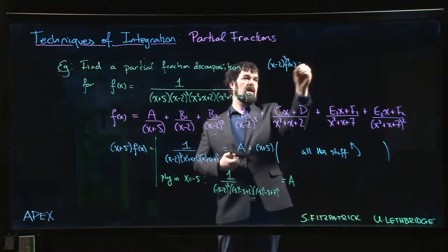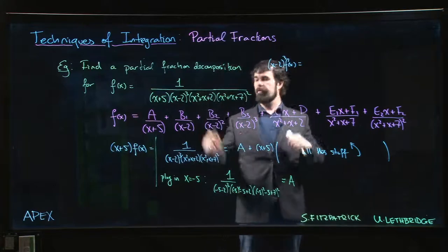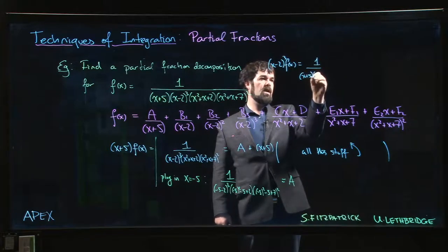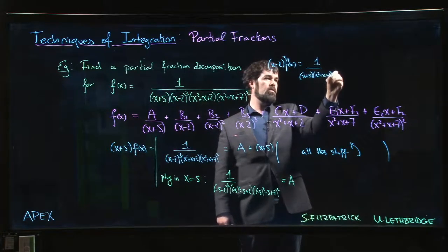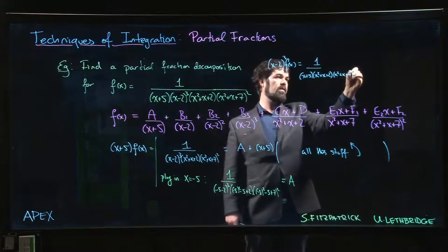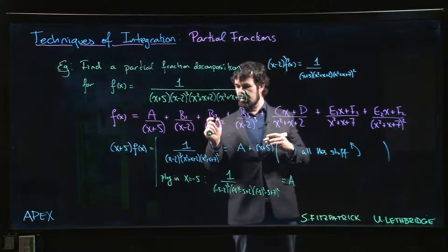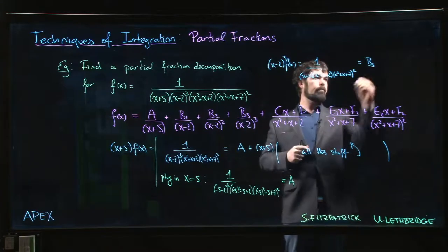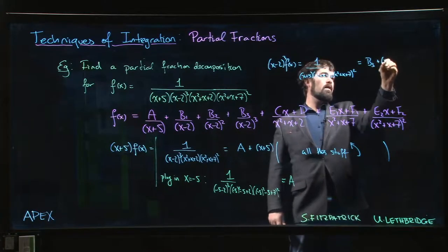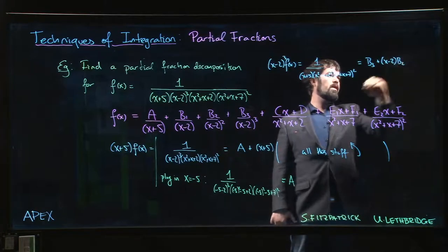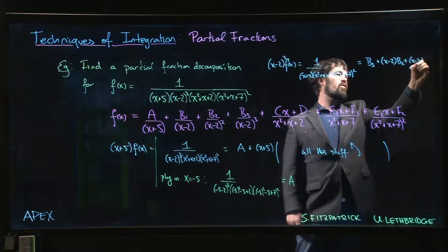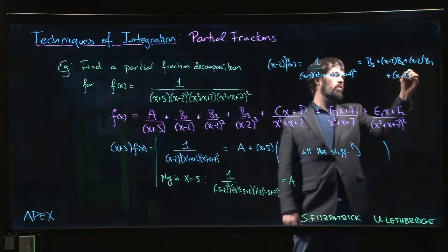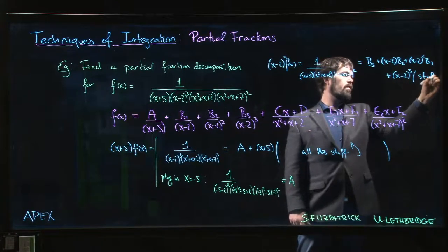On the other hand, it's equal to B3 plus x minus 2 times B2, plus x minus 2 squared times B1, and then x minus 2 cubed times all the other stuff. So then you can plug in x equals 2 and you solve for B3.